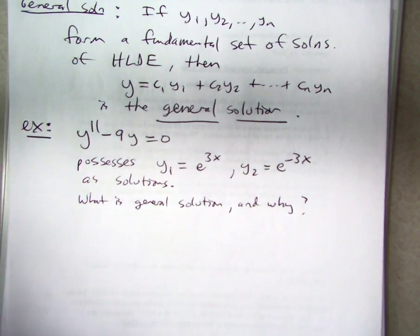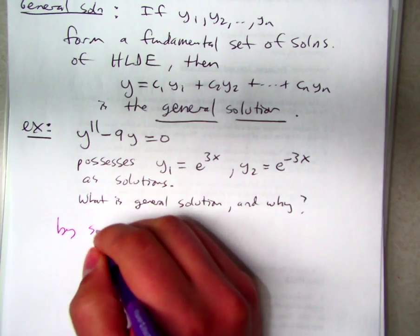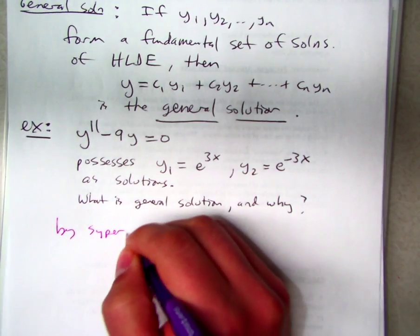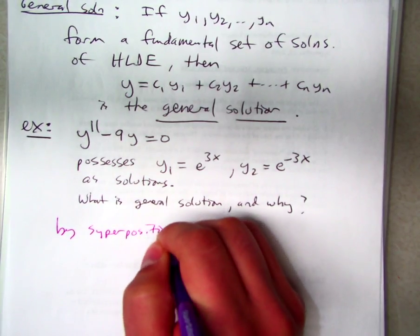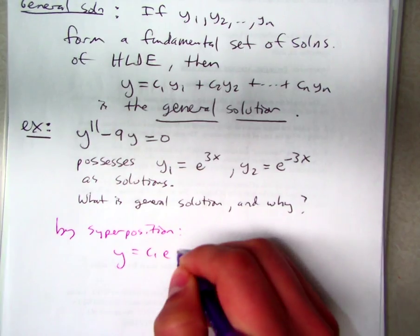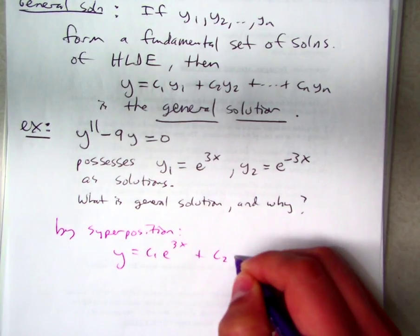So yeah, the key here is superposition principle. We get y equals c1 e to the 3x plus c2 e to the minus 3x.